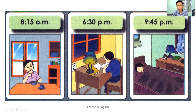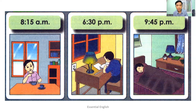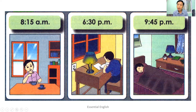At 6:30 P.M., you can see he's doing his homework. So: I usually do my homework at half past six in the evening. At 9:45 P.M. — a quarter to ten — he's in bed and asleep. So: I usually go to bed at a quarter to ten at night.